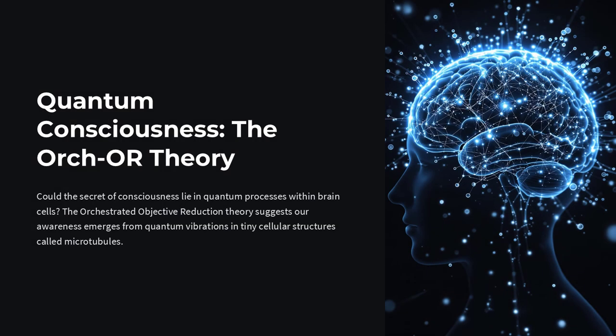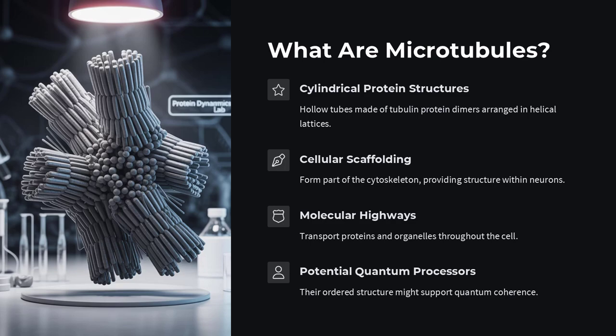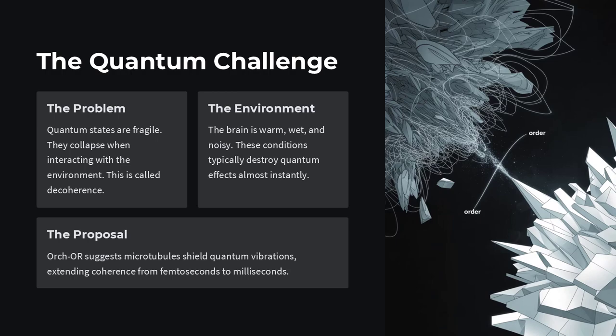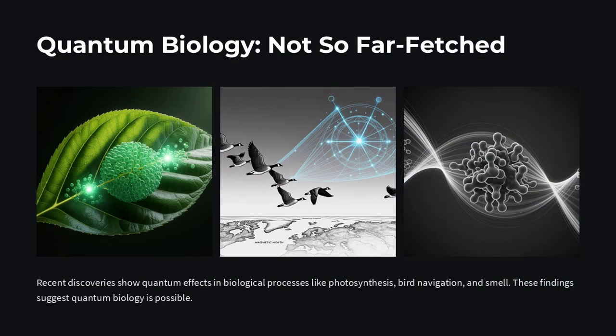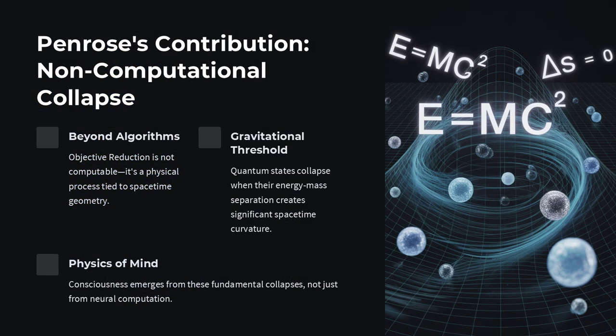Imagine your brain is a bustling city, with neurons as skyscrapers and synapses as busy intersections. Hidden beneath it all is a network of tiny cylindrical highways called microtubules. Could these nanoscopic structures be doing more than just scaffolding? According to the Orch-OR theory, orchestrated objective reduction proposed by Roger Penrose and Stuart Hameroff, microtubules might host quantum processes that spark consciousness itself.